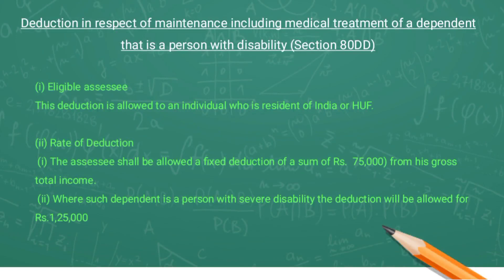Hello students, today we will discuss various other deductions. First of all, let's start with deduction in respect of maintenance including medical treatment of a dependent — that is a person with disability — under section 80DD. This deduction is allowed to an individual who is a resident of India or HUF, and the amount of deduction shall be fixed at rupees 75,000. Where such dependent is a person with severe disability, the amount of deduction shall be rupees 1 lakh 25,000. To claim this deduction, various conditions have to be fulfilled by the assessee.